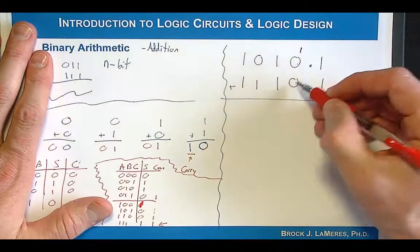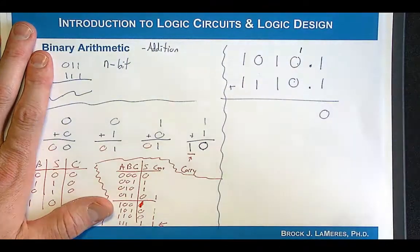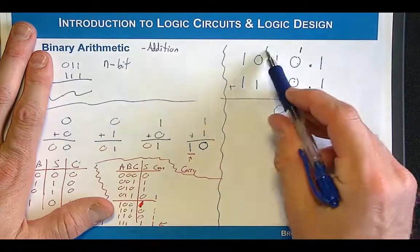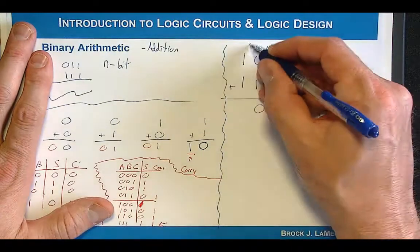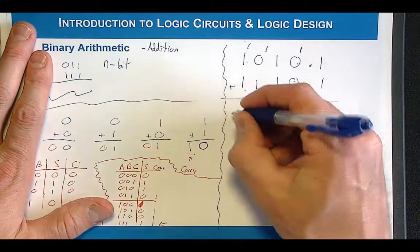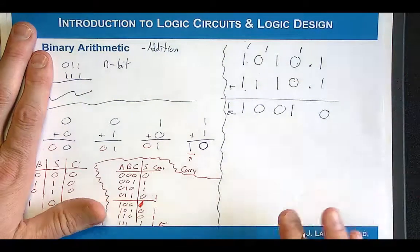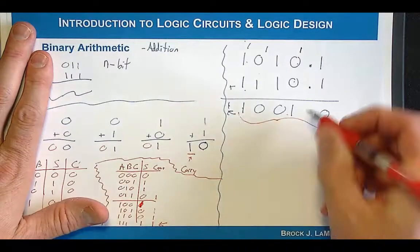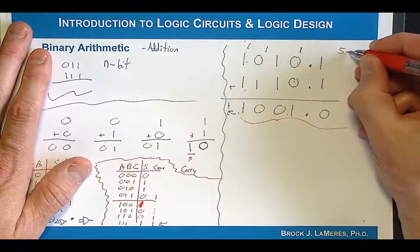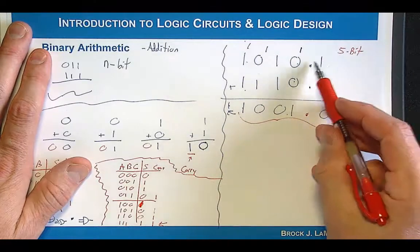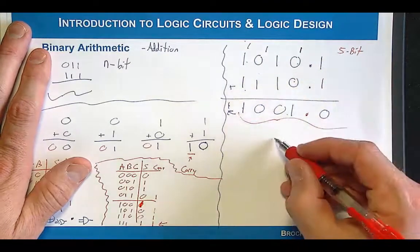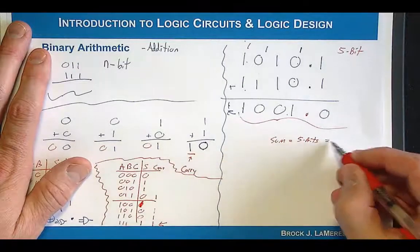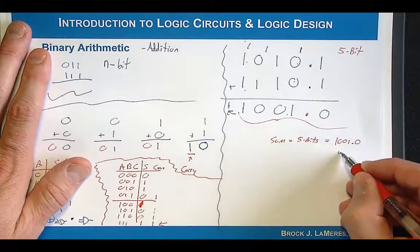Now completing the multi-bit example: 1 plus 0 plus 0 is simply 1 with no carry; then 1 plus 1 is 0 with a carry; then 1 plus 0 plus 1 is also 0 with a carry; and 1 plus 1 plus 1 is 1 with a carry. When we talk about the sum and carry, we had a five-bit sum representing the two inputs, and the result is also going to be five bits. The sum in this situation would be 1001.0 with a carry.